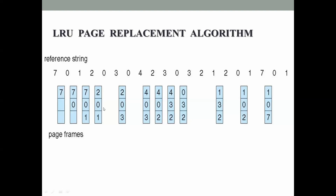Next page reference is 0. Zero is already in memory, so there is no page fault. Next page reference is 3. Three is not in memory, so it generates a page fault and must be loaded. Pages in memory are 2, 0, and 1. Checking past references: 0, 2, 1 - one appears last, meaning 1 has not been used for the longest period of time. So 1 is replaced with 3.